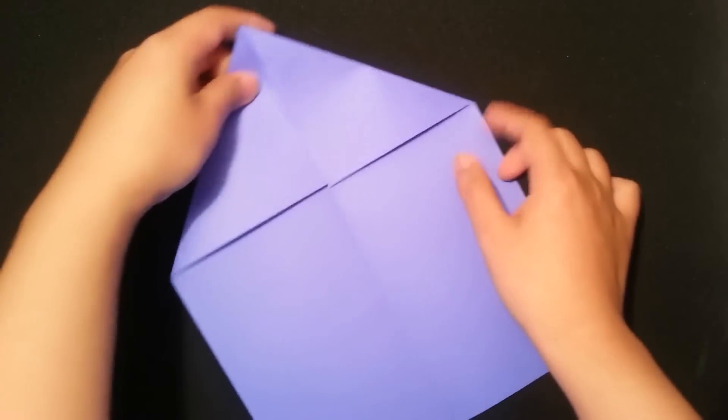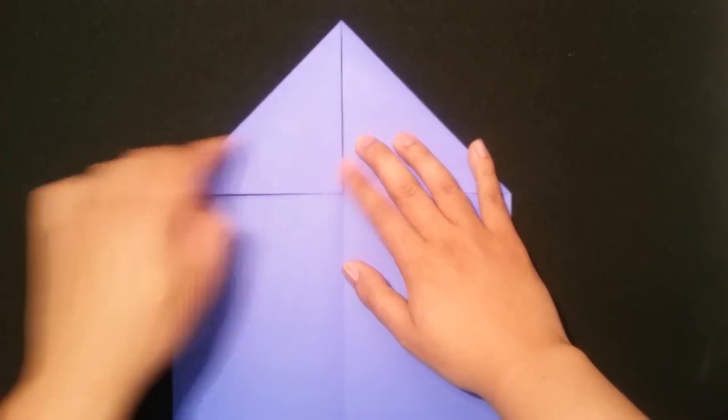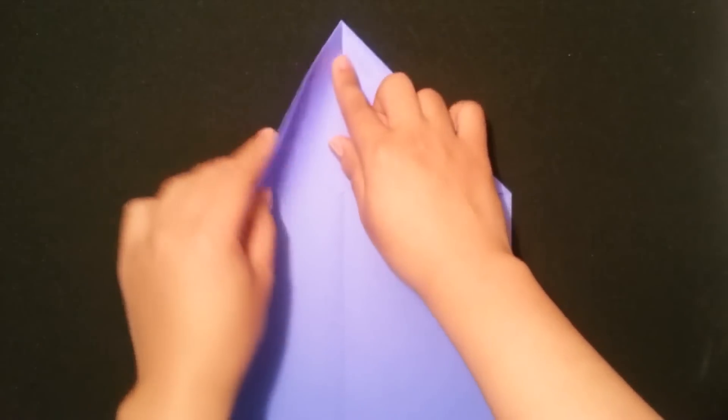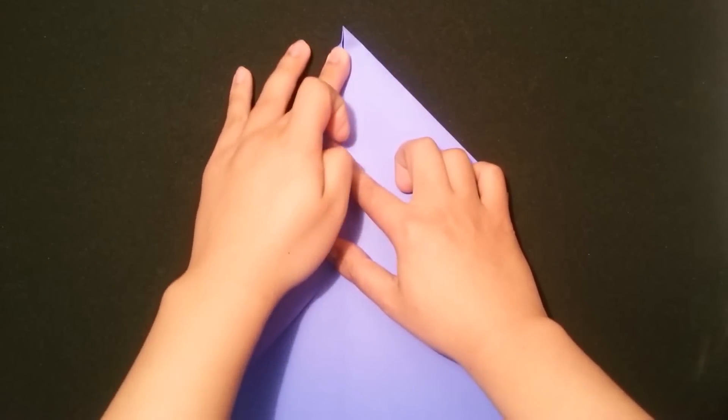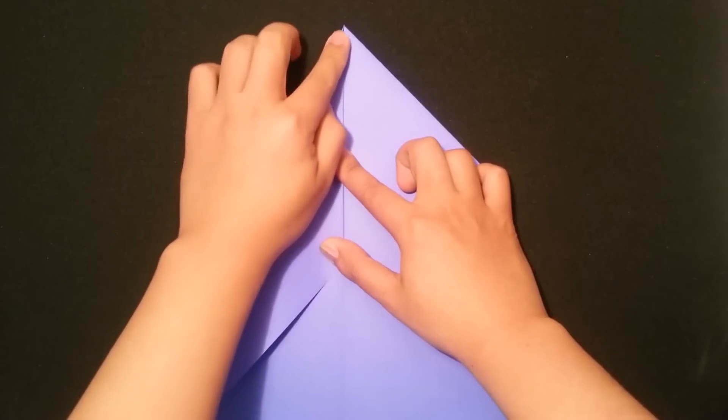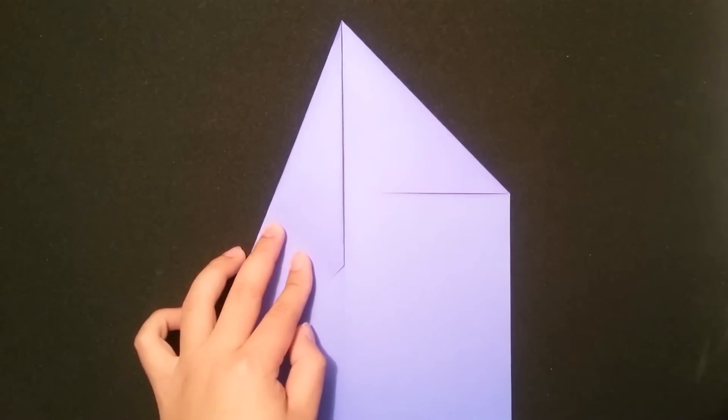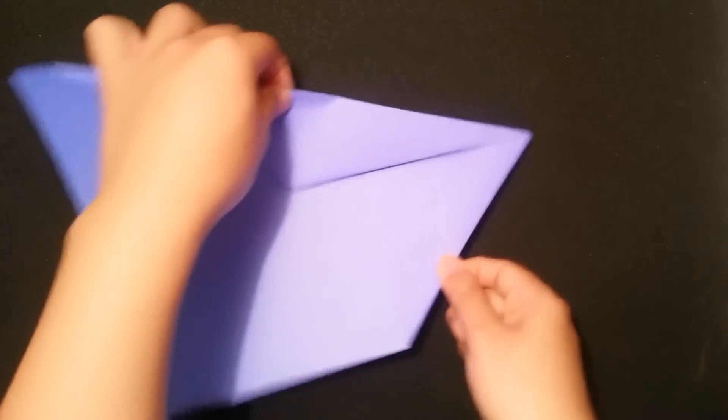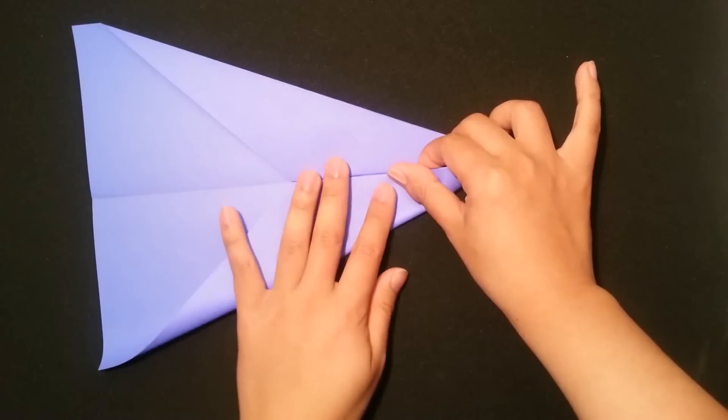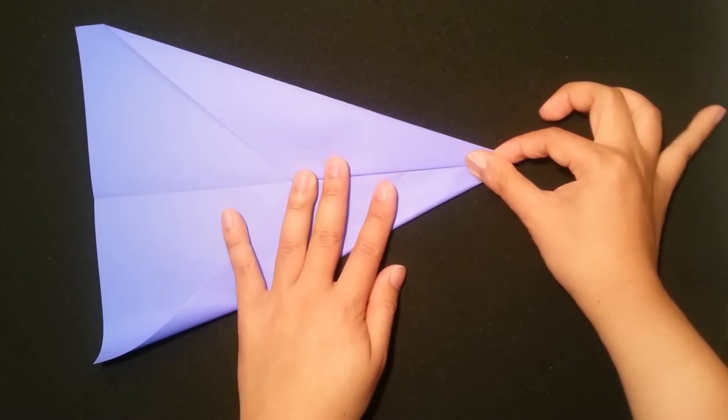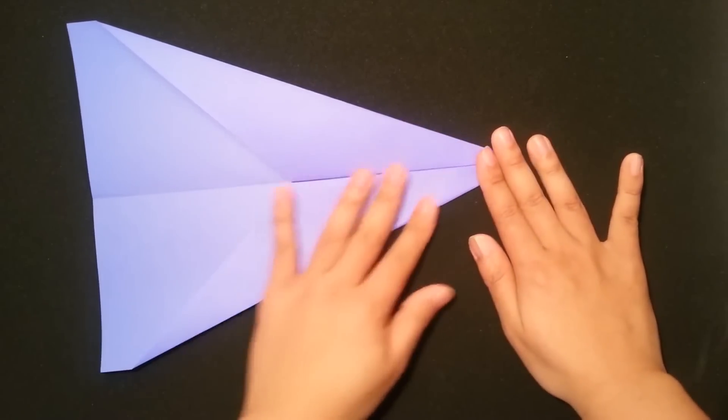Next step, I will turn the paper this way. And I start from this edge, fold it to the center crease. Then we should repeat the same step for the other side. Turn the paper this way so it will be easier for you to fold. Looks very good.